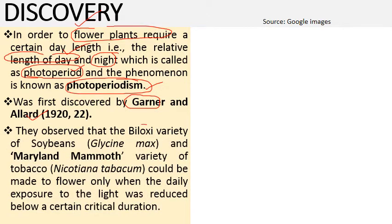Garner and Allard observed the Biloxi variety of soybean, that is Glycine max, and the Maryland Mammoth variety of tobacco, that is Nicotiana tabacum. They observed that these plants — which are basically short day plants — could be made to flower only when the daily exposure to light was reduced below a certain critical day duration. When the light is less than the critical day length, only then these plants are able to flower. They concluded that the photoperiod plays a very important role in induction of flowering.